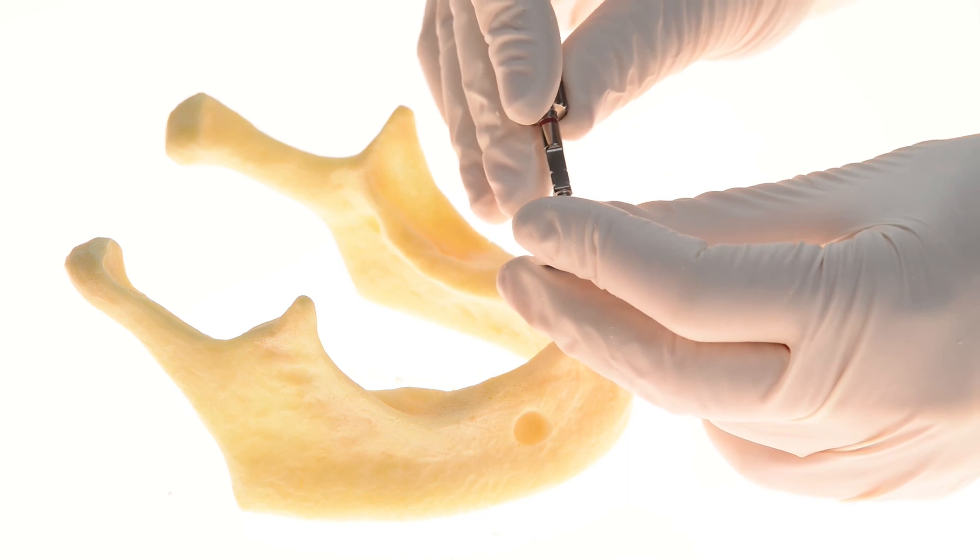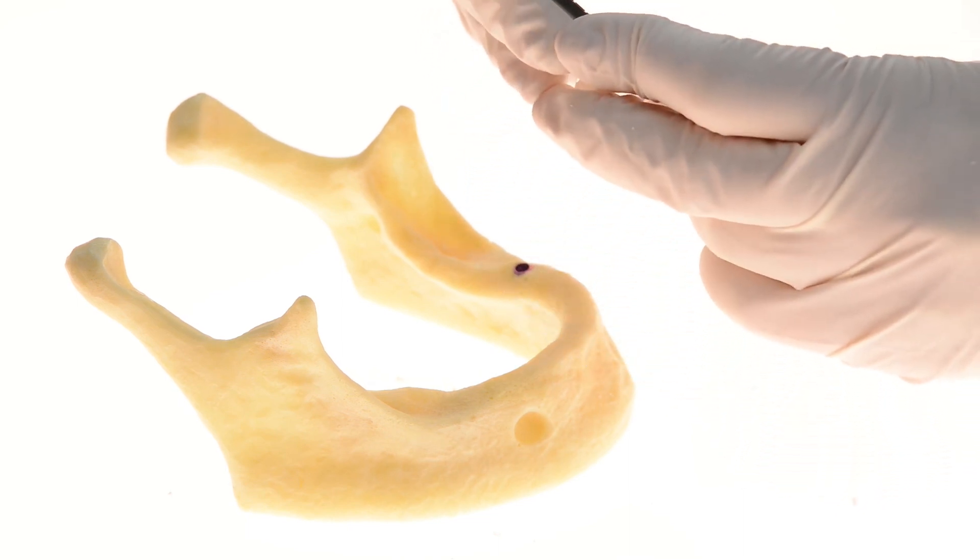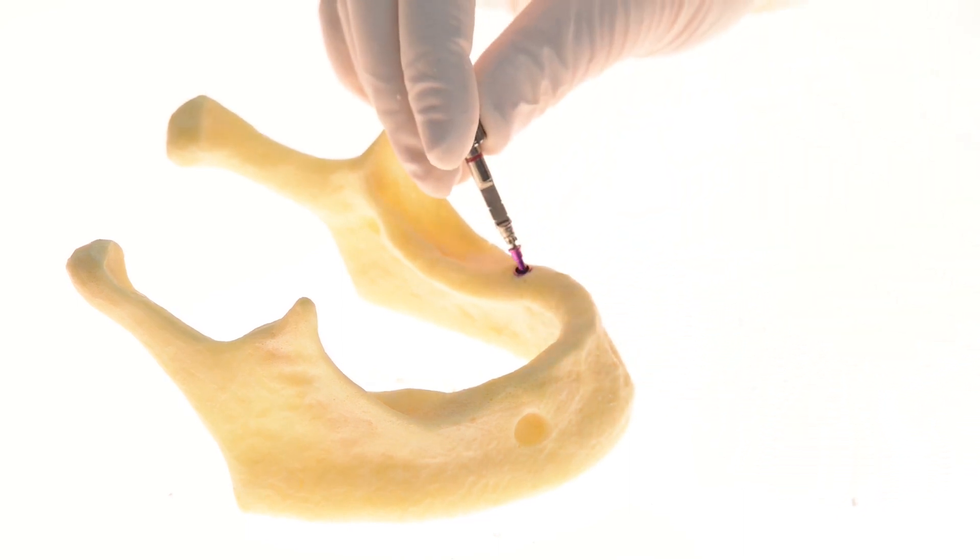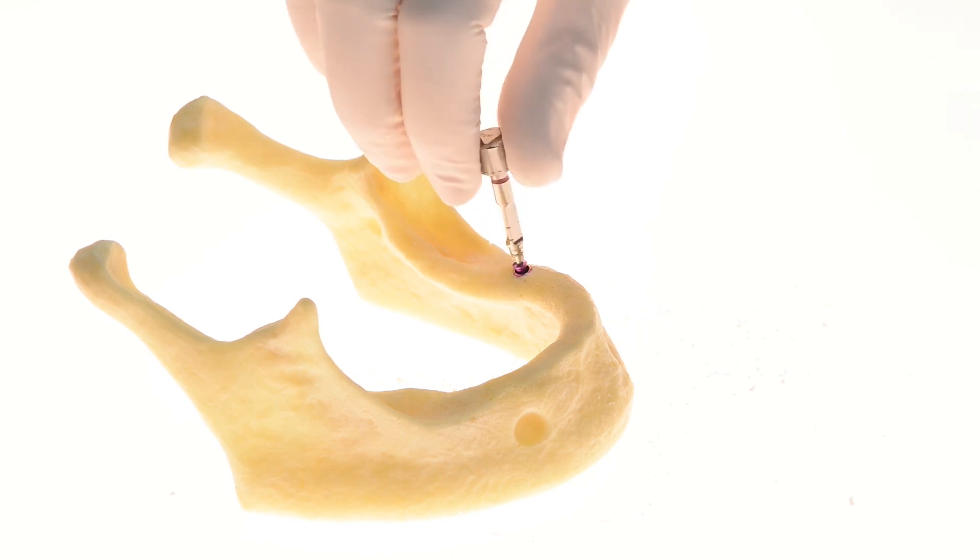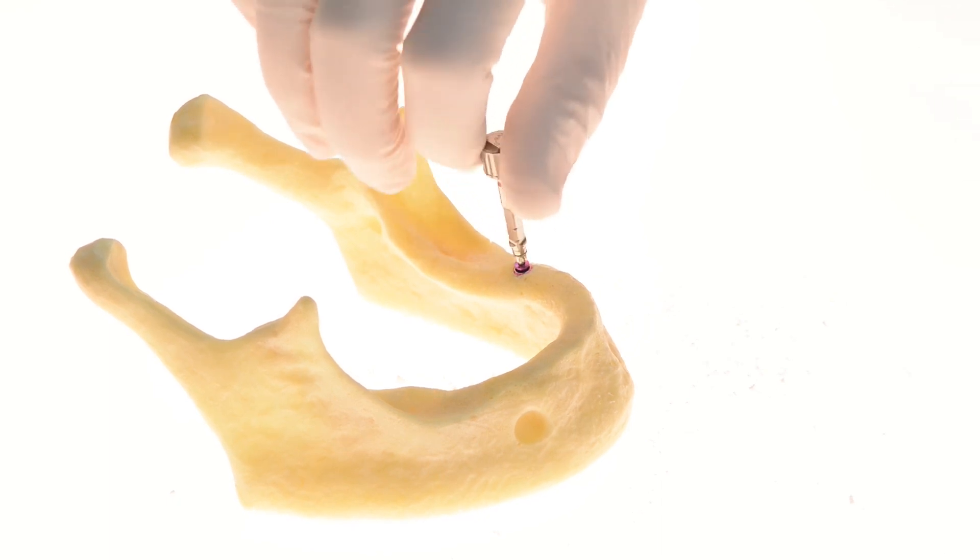After placement of the implant, use the insertion tool to remove the cover screw from the packaging and place it into the implant. Use a screwdriver to tighten the cover screw onto the implant.